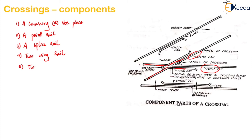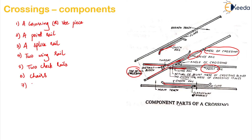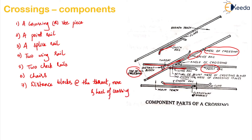The fifth component is two check rails — here these are your check rails. The sixth one is the chair that is provided between the toe and heel of crossing. Between the toe and heel of crossing, whatever chair is required to hold them, those are also some of the component parts of your crossing. The heel of crossing, and the last one is your distance block at the throat, nose and heel of crossing. So this is your distance block which you provide at the throat, and similarly at the heel and nose of the crossing you will also provide a distance block. So these are some of the component parts of the crossing.